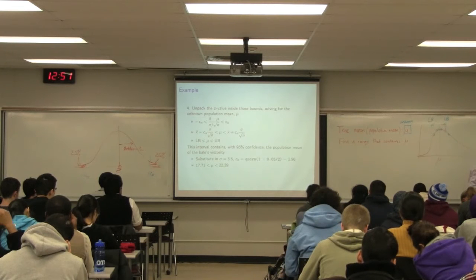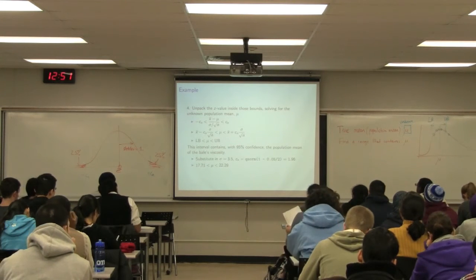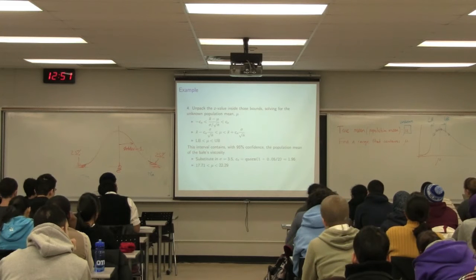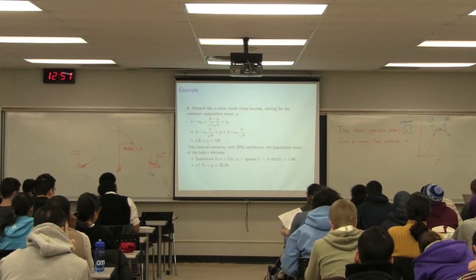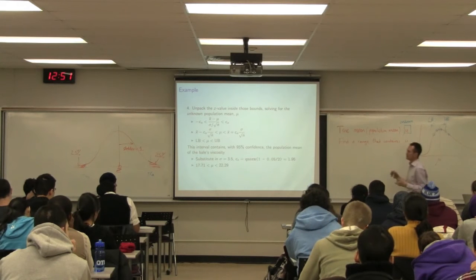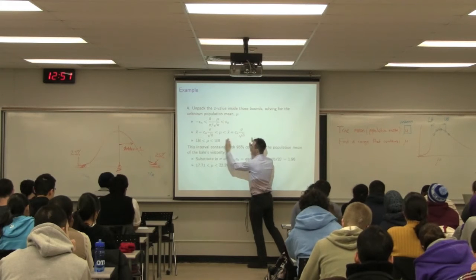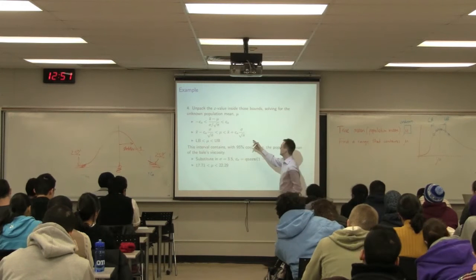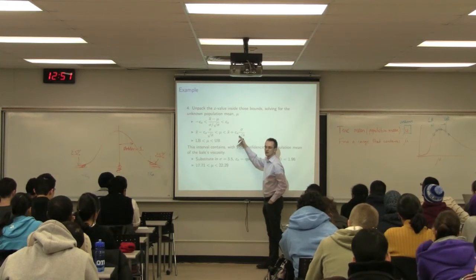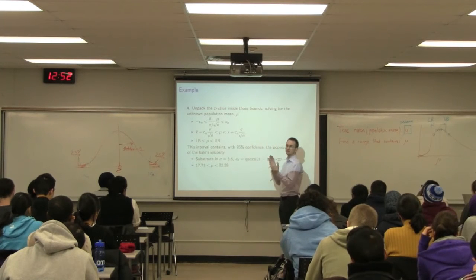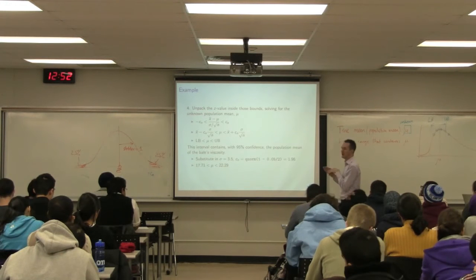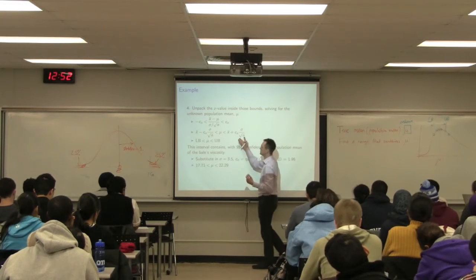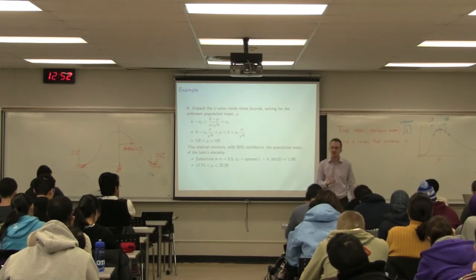What happens if I take more samples? The bounds get narrower because n is in the denominator — more samples means subtracting and adding a smaller number, so bounds come in. But there are diminishing returns because we always take the square root of n, so it's not a linear change. If I go from 10 to 20 samples, I've doubled the samples but haven't halved my interval. So it doesn't pay indefinitely to take more and more samples.